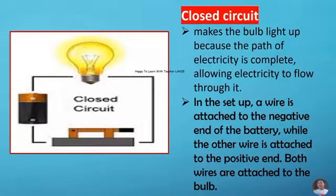What is closed circuit? Closed circuit makes the bulb light up because the path of electricity is complete, allowing electricity to flow through it. In the setup, a wire is attached to the negative end of the battery, while the other wire is attached to the positive end. Both wires are attached to the bulb.